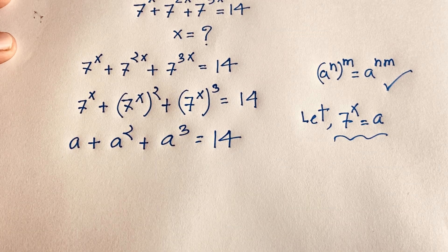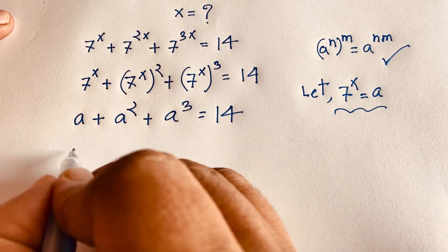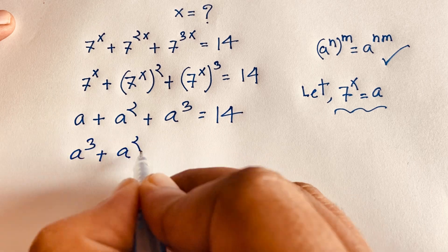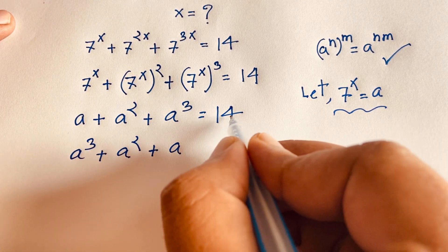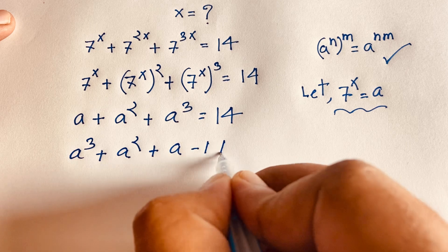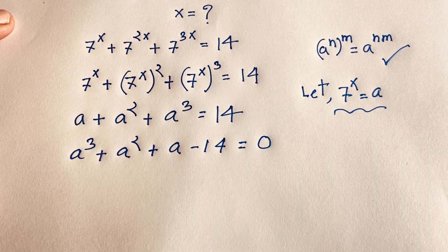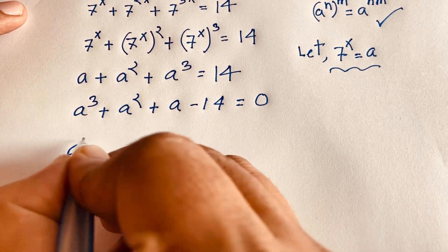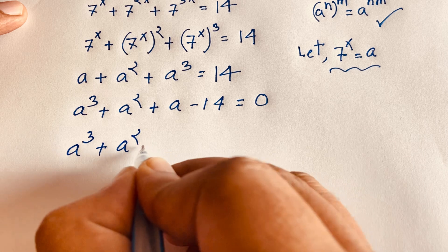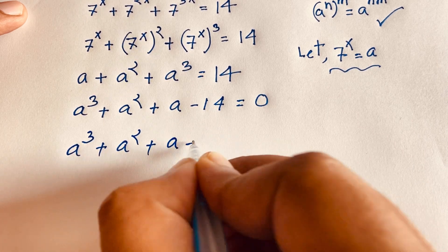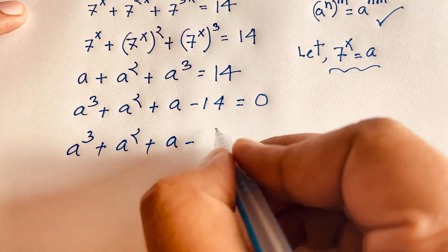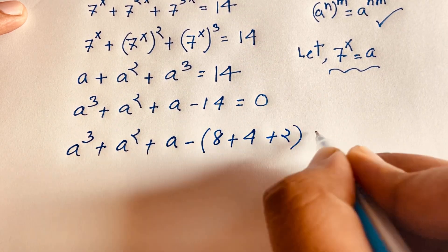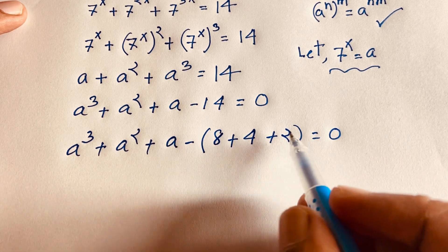Rearranging, we get a cubed plus a squared plus a minus 14 equals 0. Now I notice that 8 plus 4 plus 2 equals 14, so we can use this observation to factor the expression.